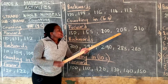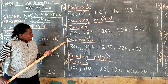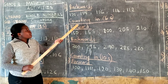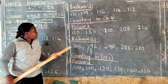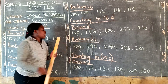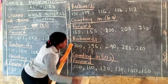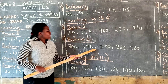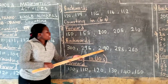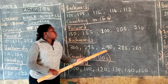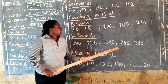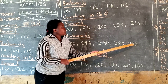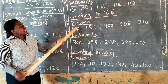Moving backwards, now you are subtracting in fives. You are still focusing on counting in fives, but moving backwards, so you are subtracting. 300 minus 5, you will get 295. 295 minus 5, you get 290. 290 minus 5, you get 285. 285 minus 5, you get 280. We are through counting in fives.